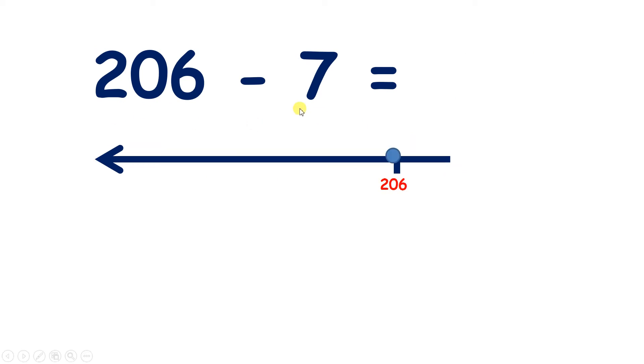But we can answer this question more quickly if we use bridging. So if we're on 206, our previous multiple of 10 is 200. So we can subtract 6 to get 200, and then subtract another 1. So we've subtracted 7 altogether, and that gives us our answer 199.